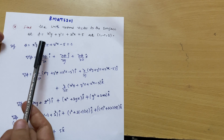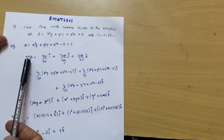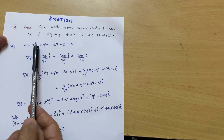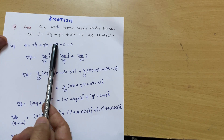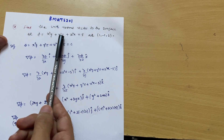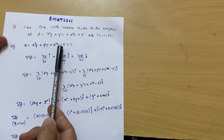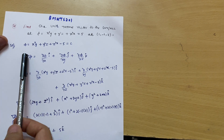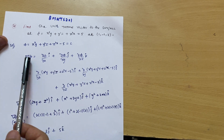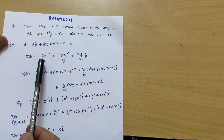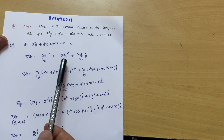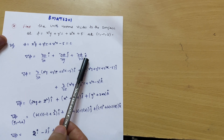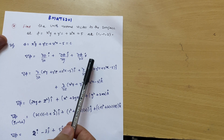What we have to calculate first is ∇φ. We can write down this equation as x²y + y²z + z²x − φ = 0. The formula for ∇φ is ∂φ/∂x î + ∂φ/∂y ĵ + ∂φ/∂z k̂.